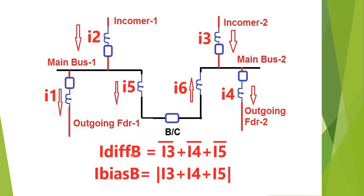Similarly, for zone B, i_diff_B is the vector sum of i3 (incomer two), i4 (outgoing feeder two), and i5 (CT on the main bus one side). The bias current for zone B is the scalar sum i3 + i4 + i5.